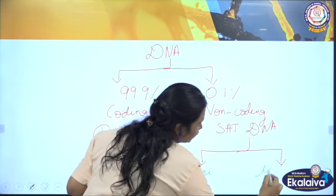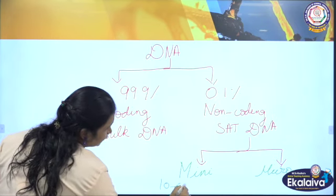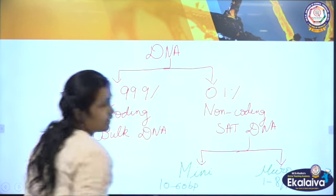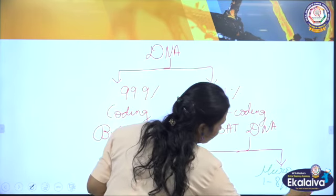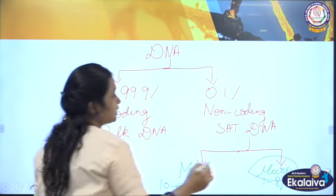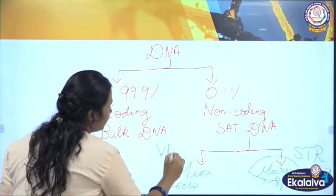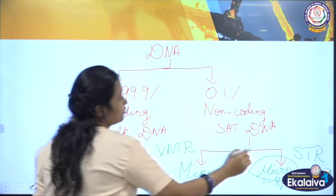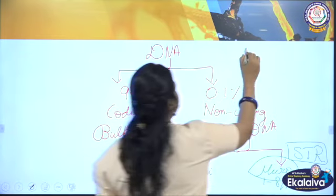Mini-satellite has around 10 to 60 base pairs. Micro-satellite has 1 to 8 or 9 base pairs — in some textbooks it is 9, in some it is 8. Mostly we are going to work with micro-satellite, which is nothing but Short Tandem Repeat (STR). For mini-satellite, we talk about VNTR — Variable Number Tandem Repeat. We will now see what a tandem repeat is.